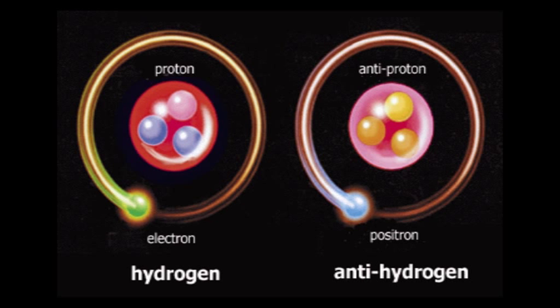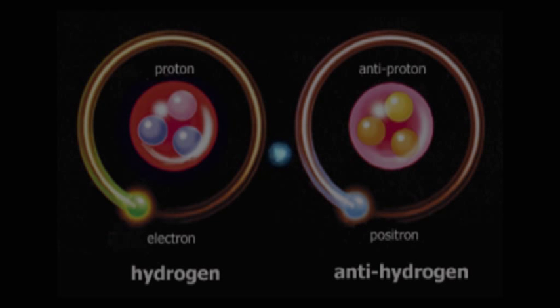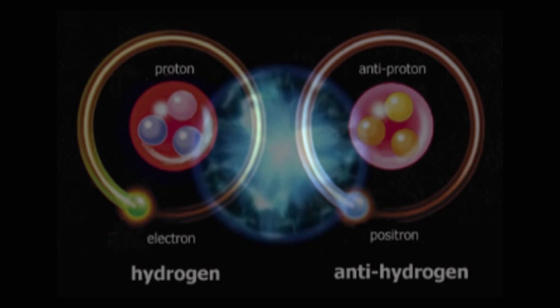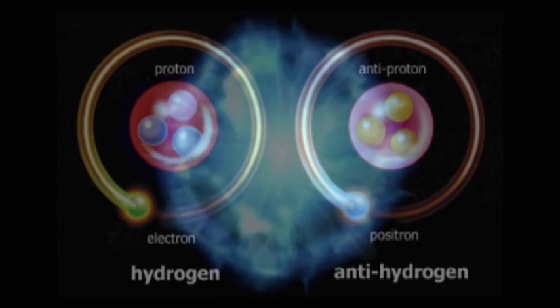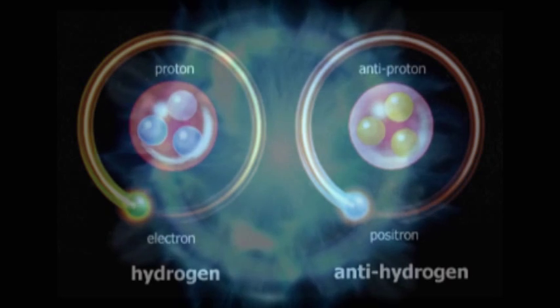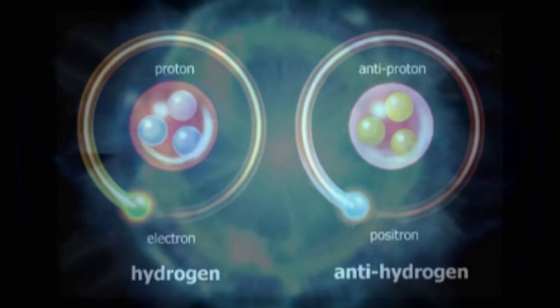Antimatter is basically matter with reverse charge. An anti-hydrogen atom is an atom with a negative proton and a positive electron. It is a big mystery that practically all antimatter disappeared in the creation of the universe according to the Big Bang theory. All particles in the universe have antiparticles, but very few compared to particles.